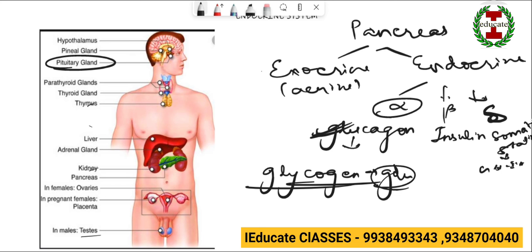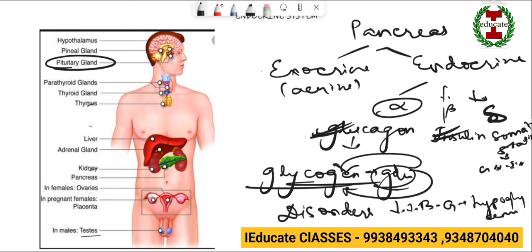Now moving on to the disorders of pancreas. So whenever there is an overexpression of insulin hormone or an underexpression of insulin hormone there is a disorder. So the overexpression will convert more glucose inside the blood into glycogen, therefore decreasing the blood glucose level and resulting in hypoglycemia, which can further result in insulin shock where a person goes into coma due to decrease in blood glucose level. But if there is an under secretion of insulin, it increases the blood glucose level and this condition is known as hyperglycemia.